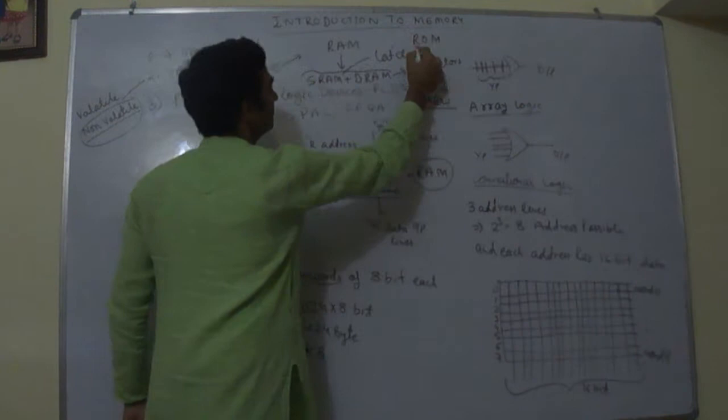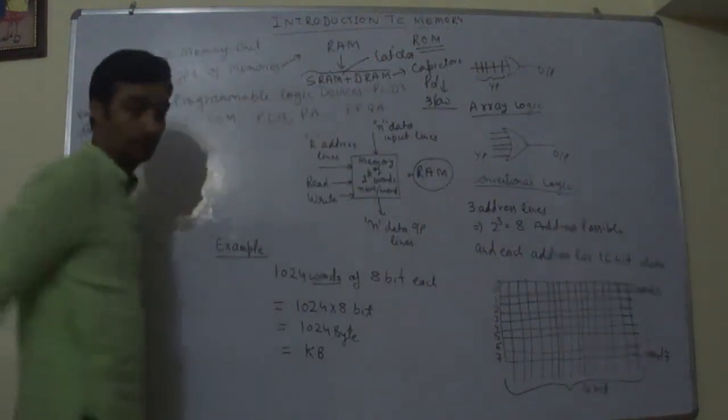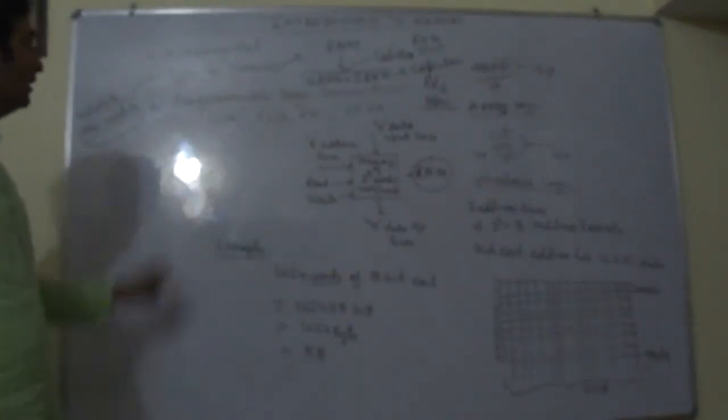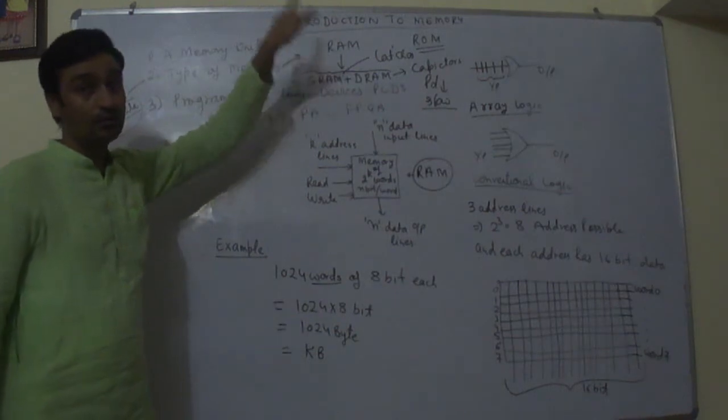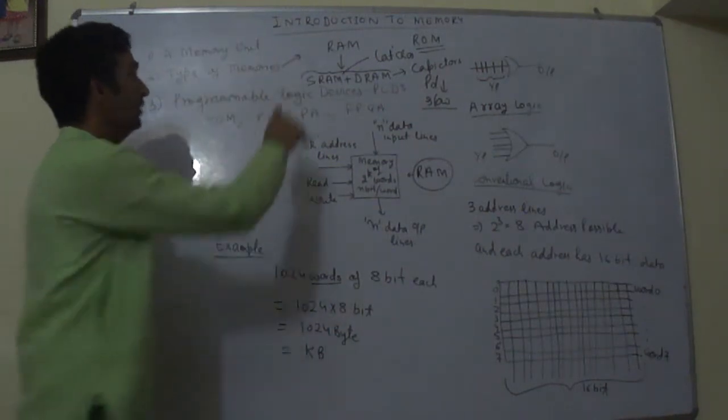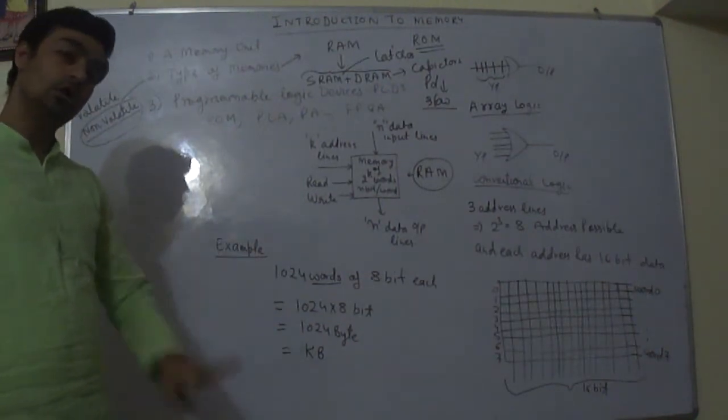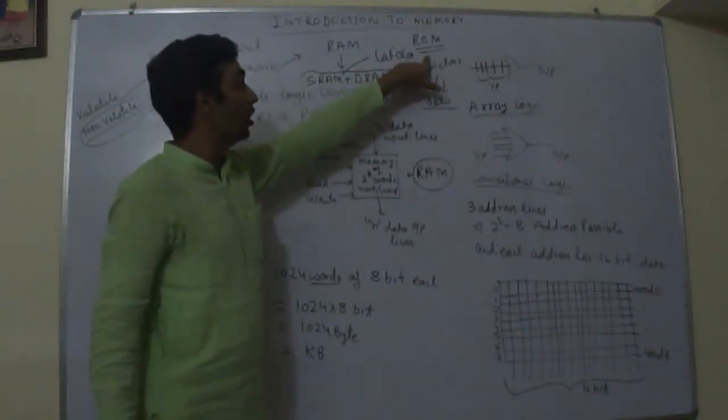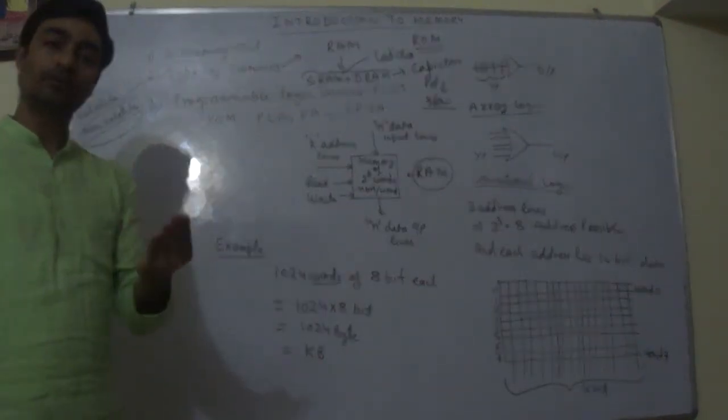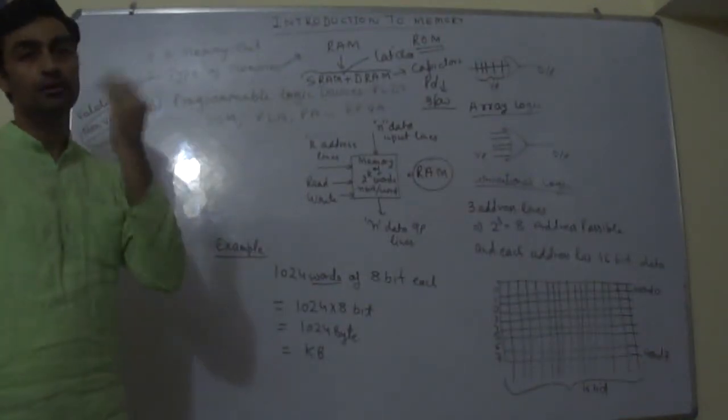So we can say non-volatile is ROM. ROM is the non-volatile memory and RAM is the volatile memory. So when there is no power, information from the RAM will be lost and ROM information will always stay whether there is power or there is no power.